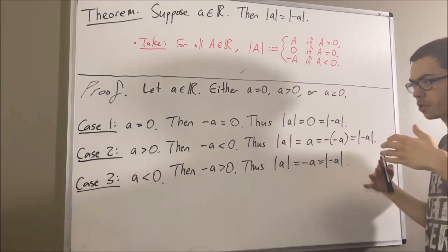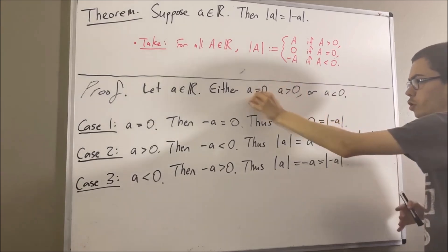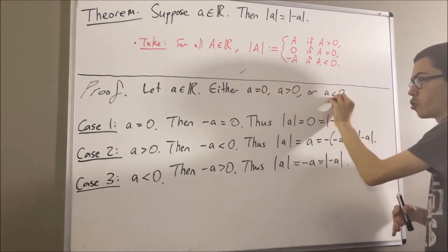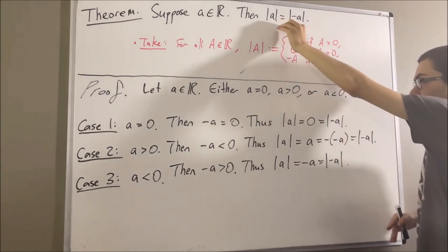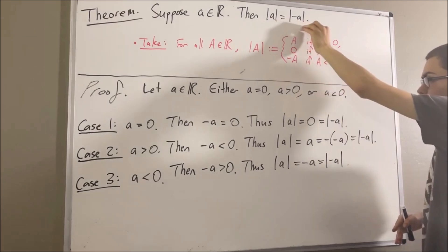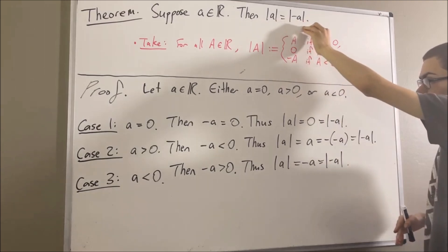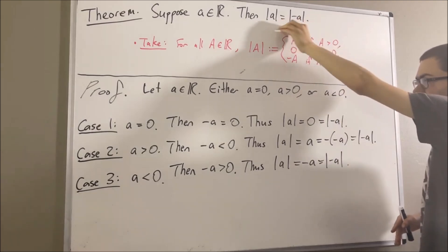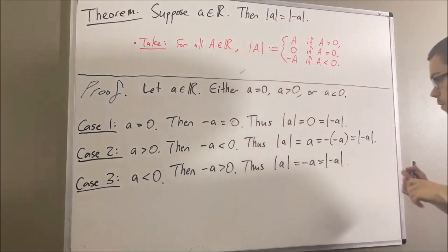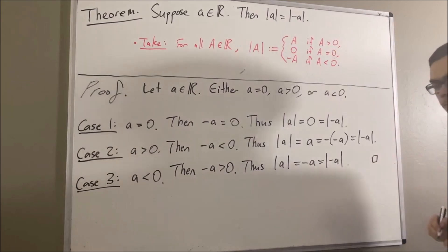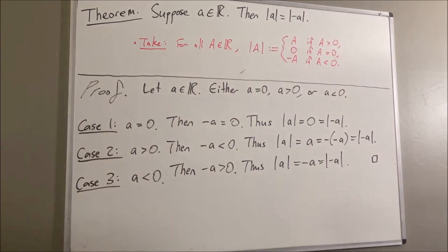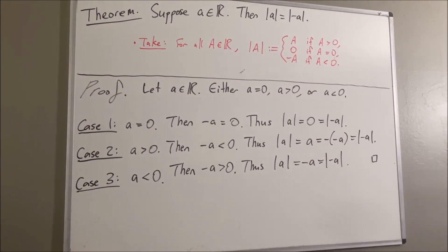So putting this all together, no matter which one of these cases happens to be true, we have that the absolute value of A is equal to the absolute value of negative A. And that's exactly what we wanted to prove. So this completes the proof. And that's pretty much it for this video.